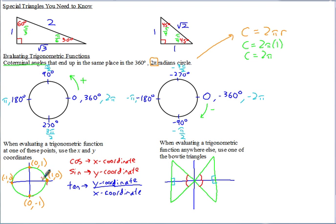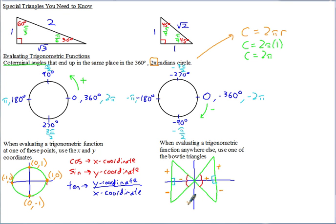If you're at one of the four axis points use the unit circle, but otherwise use either the 30-60-90 or 45-45-90 triangle drawn in the appropriate quadrant. Think of x and y axes to see where everything is positive or negative. In the first quadrant, both x and y are positive. In the fourth quadrant, x is positive but y is negative. In the second quadrant, x is negative but y is positive.